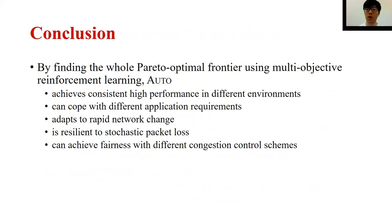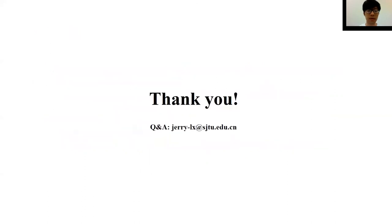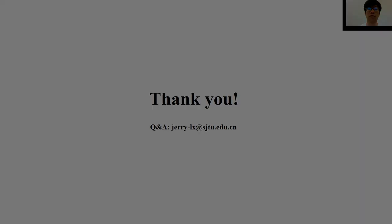In conclusion, this paper proposes adaptive congestion control AUTO. It doesn't target finding the optimal result for a single preference, but instead aims to find optimal policies for all possible preferences. By doing so, it achieves consistent high performance in different environments, can cope with different application requirements, adapts to rapid network changes, is resilient to stochastic packet loss, and can achieve fairness with different congestion control schemes. That's all. Thanks for listening.